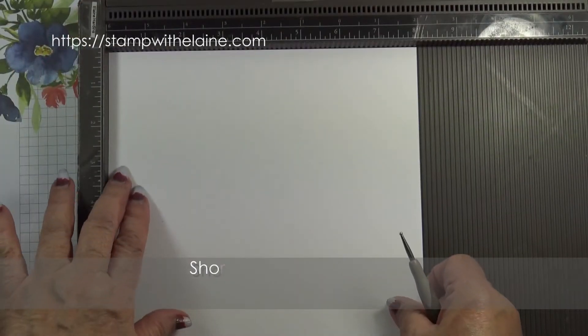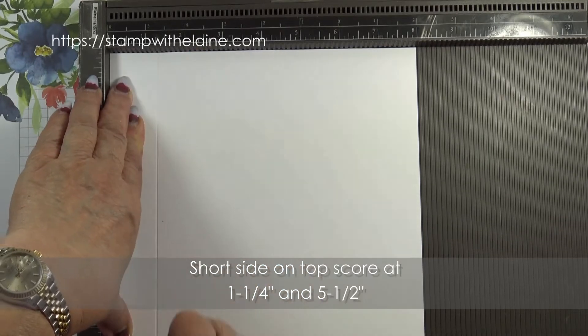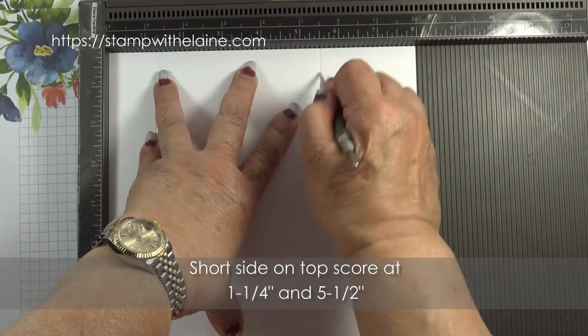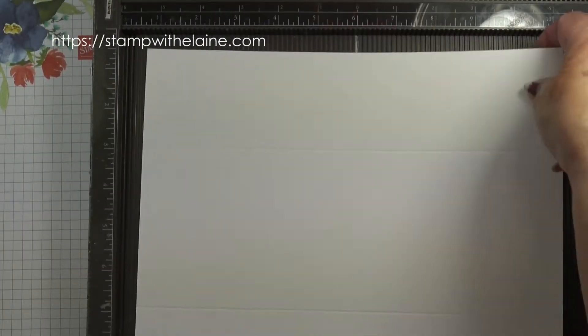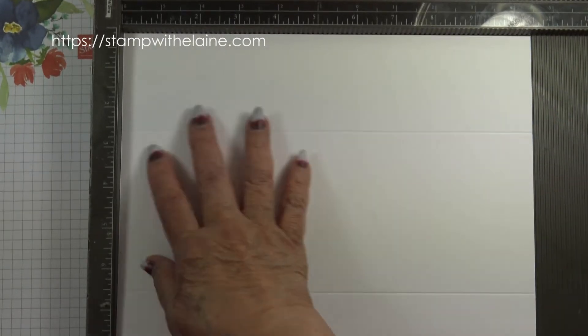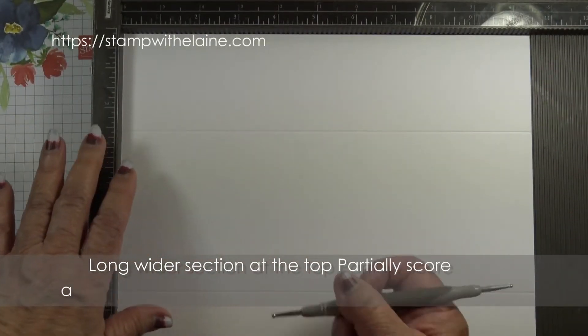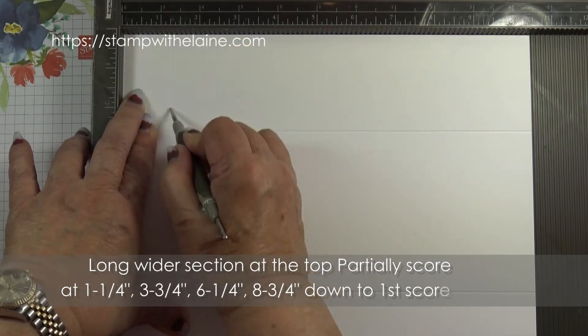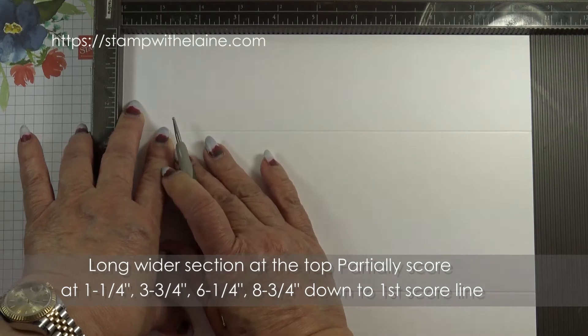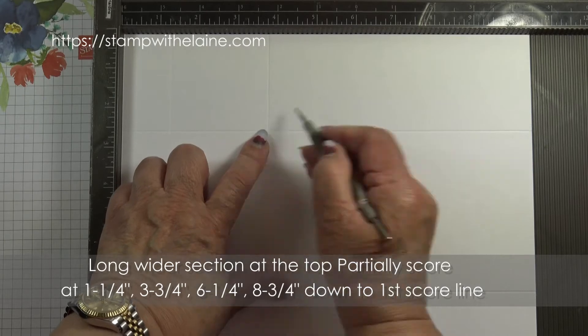The short side at the top you score at one and a quarter inches and five and a half inches. Then step two, you rotate your cardstock so that the wider panel is at the top and your first score line partially scored up to this first score line here. And you score that at one and a quarter inches down to that first score line. Then at three and three quarters inches down to this score line.